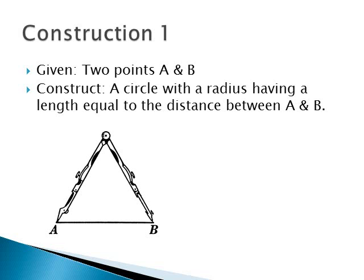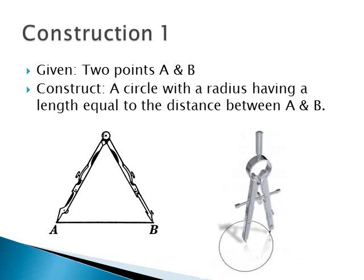So if this is A and B, you're going to put your compass, the pivot side on one point, and the pencil side on the other point. And then you're literally just going to draw the circle with that radius.